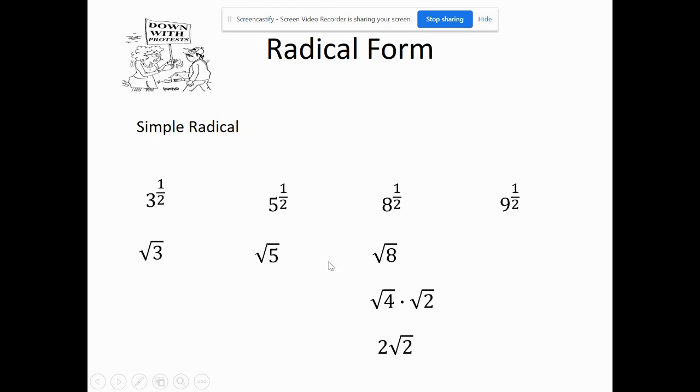But then this other one, this nine, what's the square root of nine? That's three. That simplifies down to three even. That is the simplest radical form.